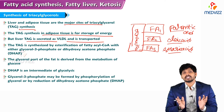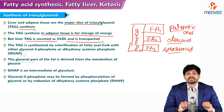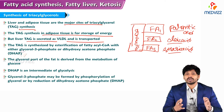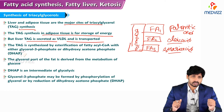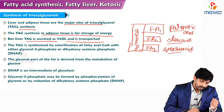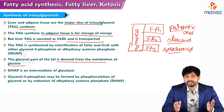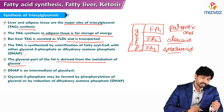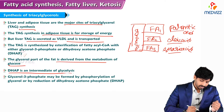Liver TAG is secreted as VLDL and transferred to other tissues. TAG is synthesized by esterification of fatty acyl-CoA with either glycerol-3-phosphate or dihydroxyacetone phosphate (DHAP), one of the intermediates of gluconeogenesis — or used in glycolysis. The glycerol part of fat is derived from glucose metabolism, as glycerol enters gluconeogenesis. DHAP is an intermediate of glycolysis.